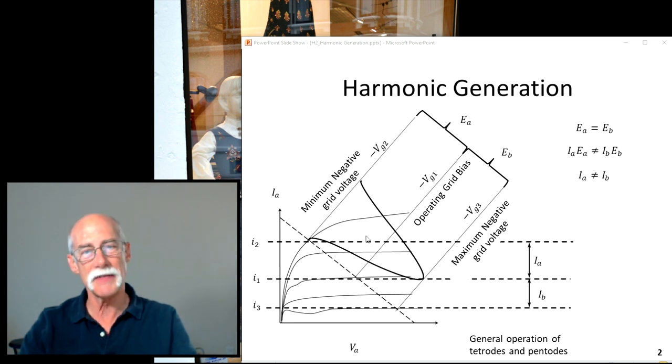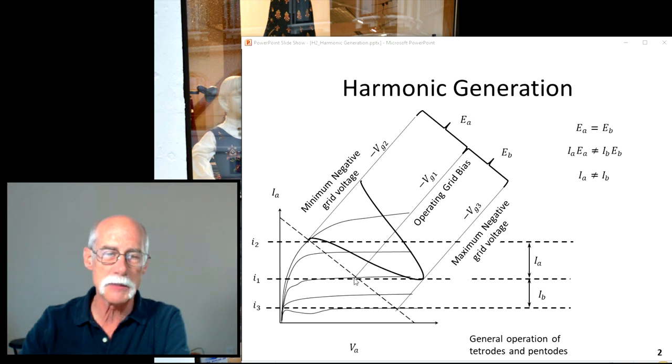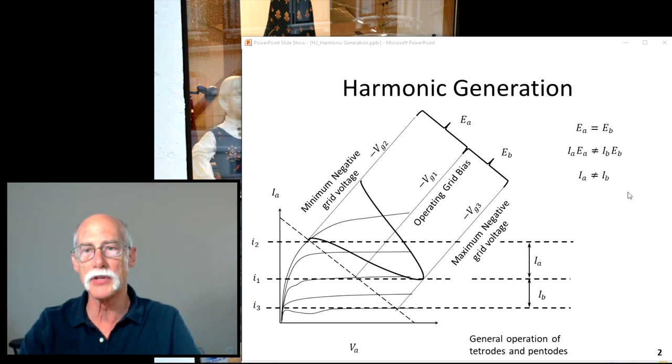But in this case, given that it's a pentode, Ia, the current difference between the bias point and the minimum negative voltage is greater than, or not equal to, would be a better way of saying it, than from the bias point to the maximum negative grid voltage. And because they're not equal, IaEa is not equal to IbEb, and that difference is why we have a harmonic. It's generating the harmonic, because the signal now is asymmetrical, at best is asymmetrical.